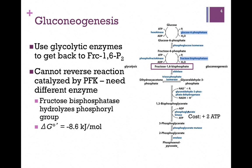So here we are at phosphoenol pyruvate. The next several steps are all readily reversible from glycolysis, so we can use the same enzymes we used in glycolysis and just go in the reverse direction. When we get to the step catalyzed by phosphoglycerate kinase, that's going to cost us ATP in the reverse direction. And remember, we need two molecules, so that's two more ATPs it's going to cost us.